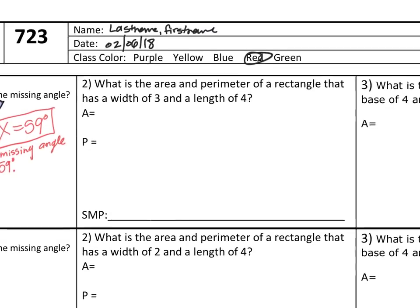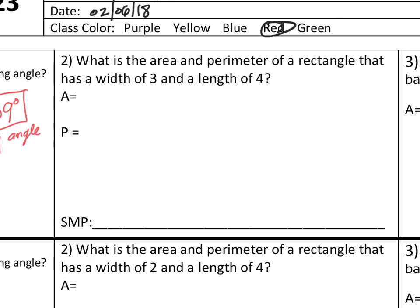What is the area and perimeter of a rectangle that has a width of 3 and a length of 4? So I'm going to annotate this question first. They didn't give me a picture, so the first thing I'm going to do is model with my math, which is SMP 4, and I'm going to draw or construct a picture. So here's my rectangle. Remember, I'm not an artist, so I'm just going to draw something that looks like a rectangle. It says that the length is 4, so the length would be here, 4, and the width is 3.